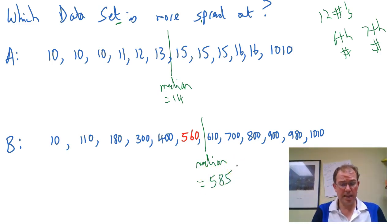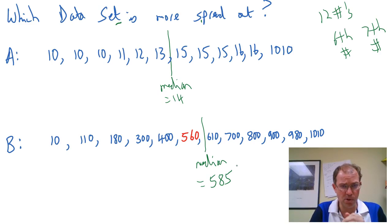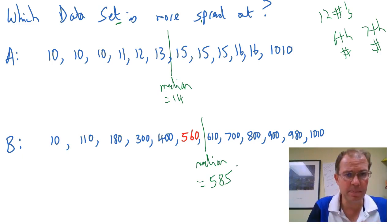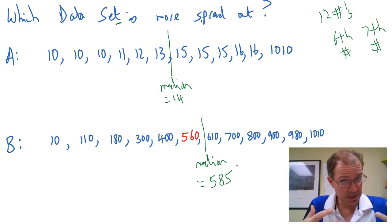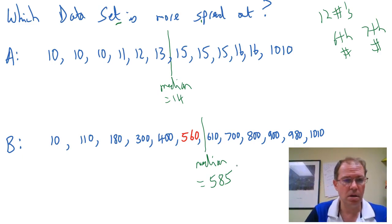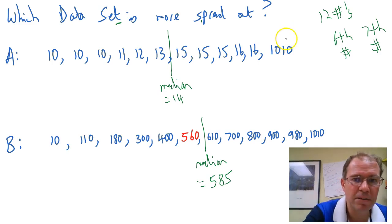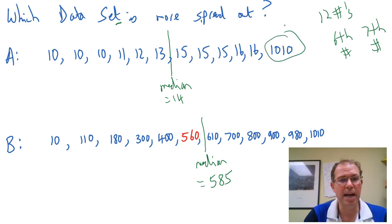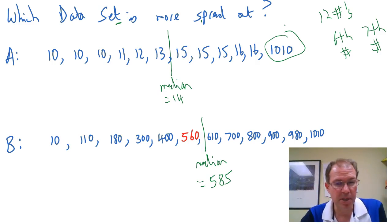Right now, look at the two sets — you can pause the video if you want — and think about which one of those two sets is more spread out. Most people, when I've asked my classes, about 90% say B is more spread out. And the reason often is that apart from this one outlier in A, A is very close together, whereas B has got big gaps and seems more spread out. So most people say B.